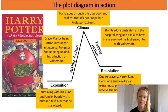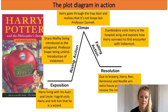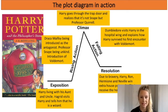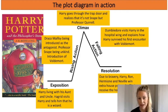The climax — the most exciting part of the story — is when Harry goes through the trapdoor and realises that it's not Snape but it's Professor Quirrell who's doing all of the mean things. The falling action is when Dumbledore visits Harry in the hospital wing and explains to Harry how he survived his first encounter with Voldemort. Lastly, you've got your resolution where, due to bravery, Harry, Ron, Hermione and Neville win extra house points — Gryffindor receives the house cup and wins. I hope that has explained the diagram in a little bit more detail so you can understand how it might look for an entire story.